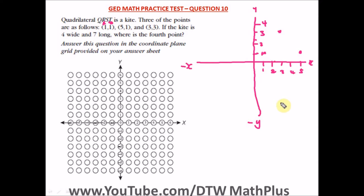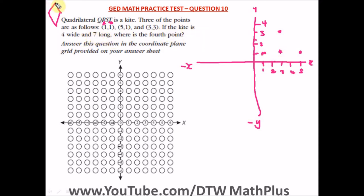To find the fourth point, remember a kite is a quadrilateral with four sides that looks like this. We can see the kite is four wide — from x equals one to x equals five, five minus one gives us four units wide. That checks out.